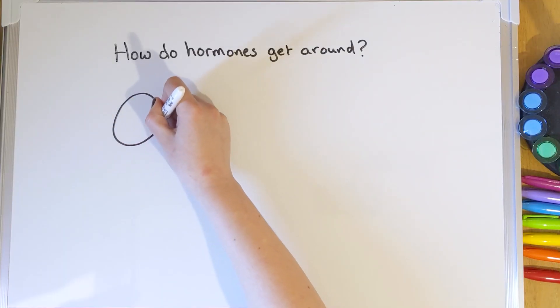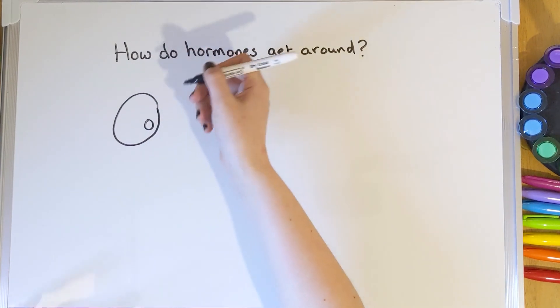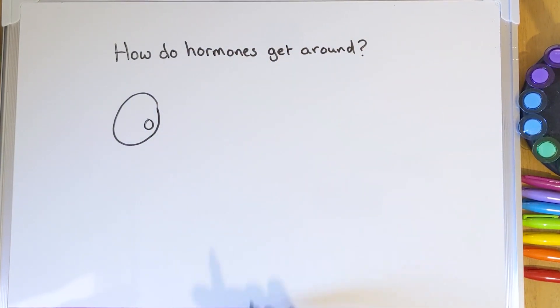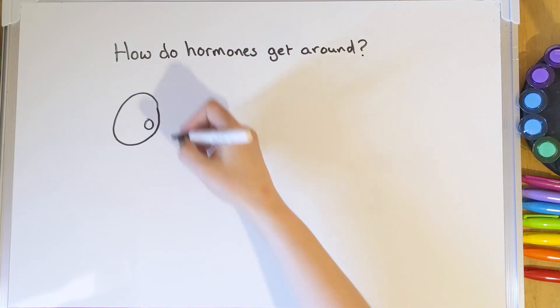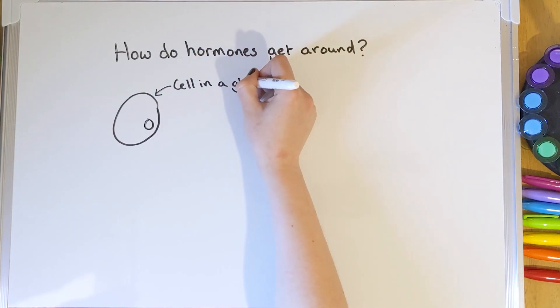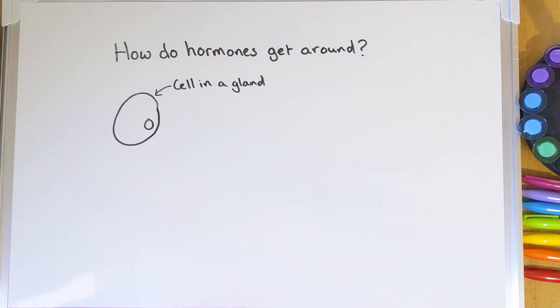We're going to look at how hormones get around your body — from those glands to all the different places that they need to work. We're going to start by drawing a cell. This would be a cell inside a gland, for example your pancreas or your adrenal gland. The main job of these cells and these glands is to produce all the hormones they need. Depending on where that cell is and which gland it's in, it will make a different hormone.